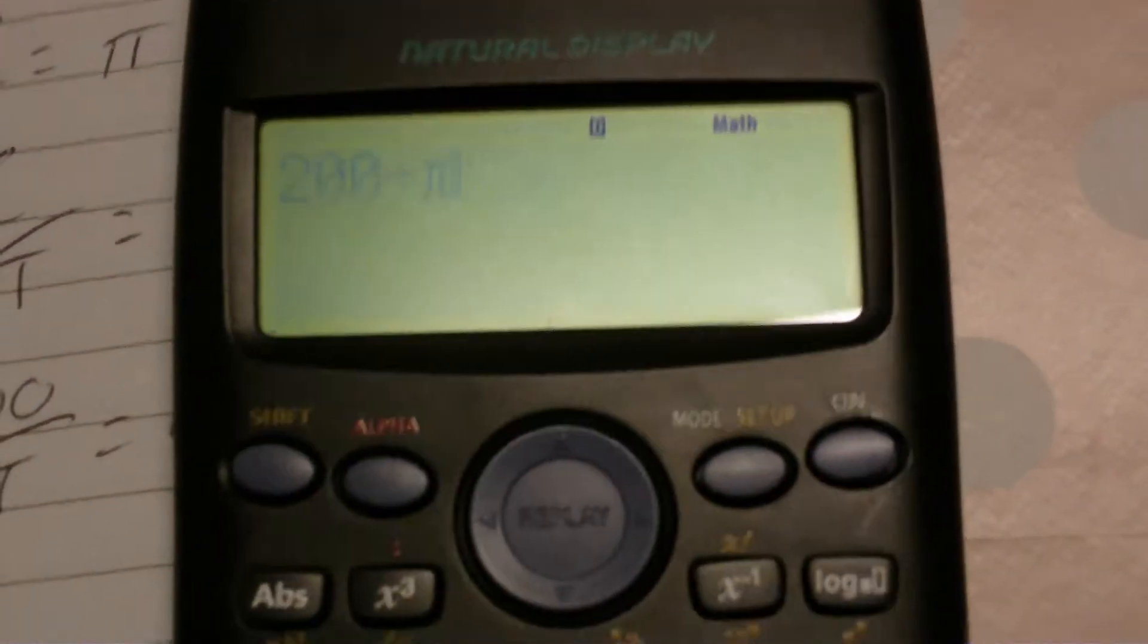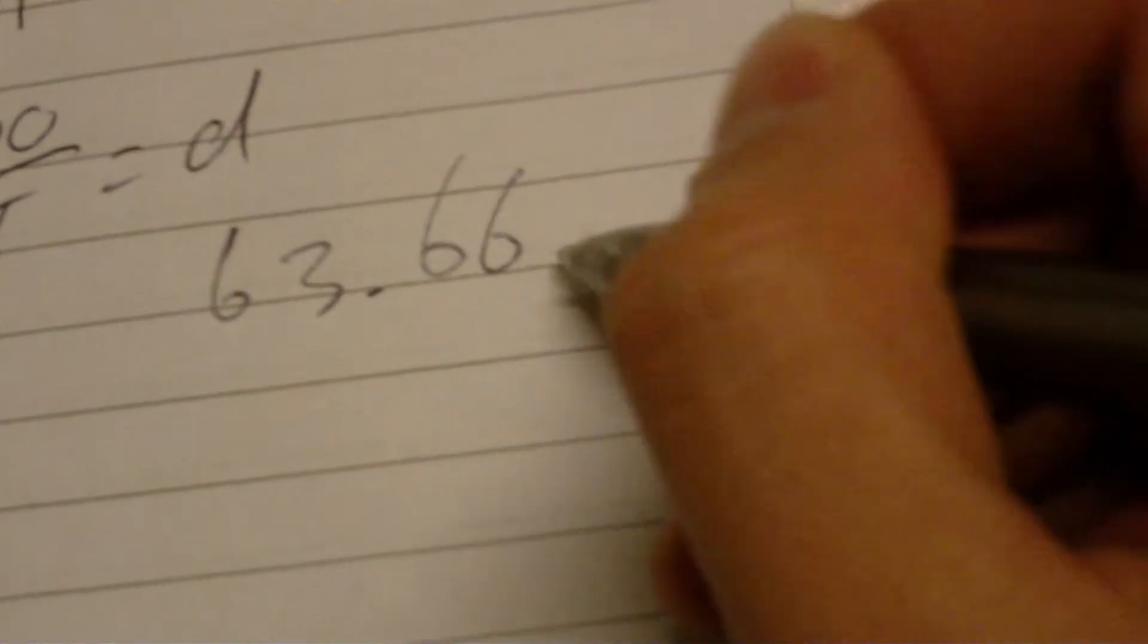So, once we put that in the calculator, we get 63.66 meters. So, if we draw our new rectangle, we know that the height is going to be this diameter here, 63.66.